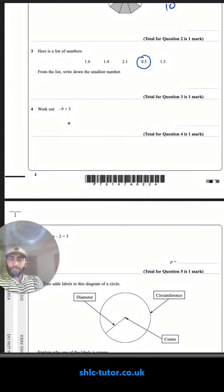Work out negative nine plus five. So negative nine, negative eight, negative seven, negative six, negative five, negative four.